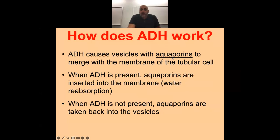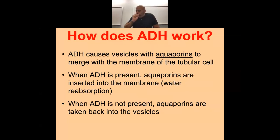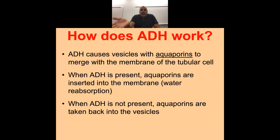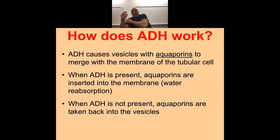ADH inserts aquaporins, which allows us to absorb water back into our bloodstream from the ascending loop of Henle, the collecting duct, and the DCT. The reason is they are cuboidal cells, so water just can't make it through them. By putting in aquaporins, we now give them a channel for the water to pull back into the bloodstream.